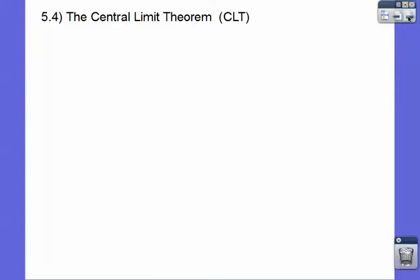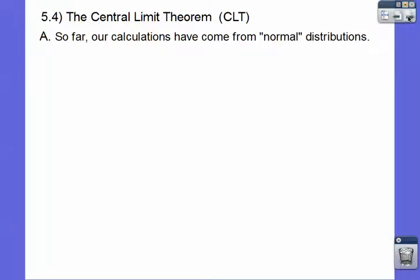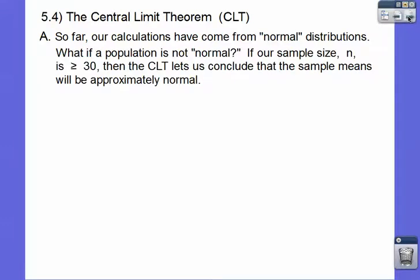So the Central Limit Theorem says this: so far, our calculations have always come from normal distributions. But sometimes we get a distribution that's not normal. So if the population is not normal, our sample size n, if it's greater than or equal to 30, then the Central Limit Theorem lets us conclude that the sample means will also be approximately normal.